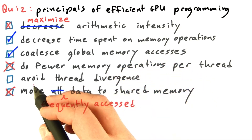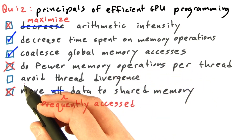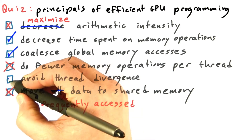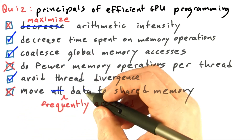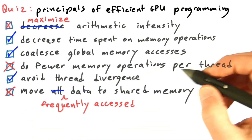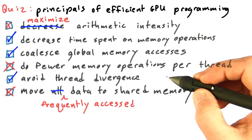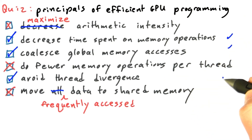Finally, the GPU does run most efficiently when adjacent threads take the same path through the code. That means it's good to avoid thread divergence. In this unit, we'll give a lot more explanation, examples, and specifics for all three of these general guidelines.